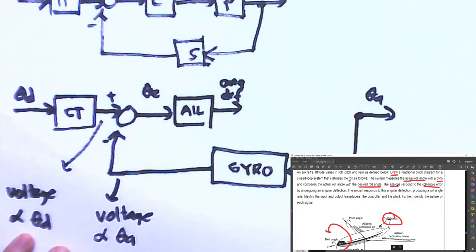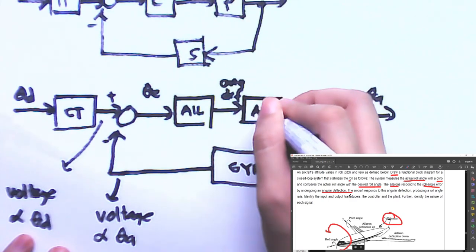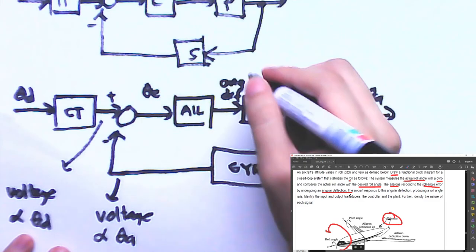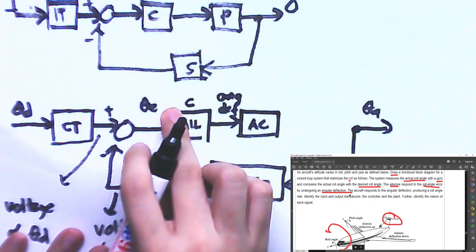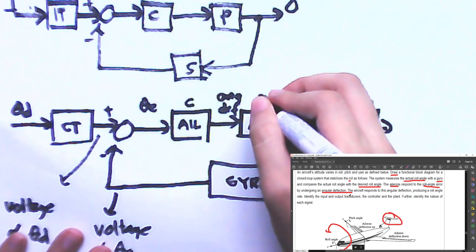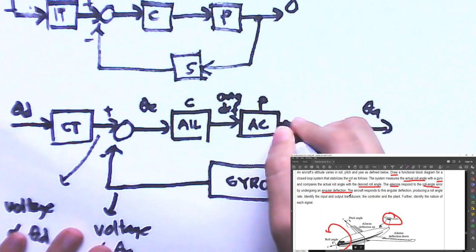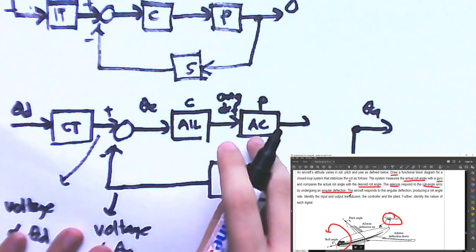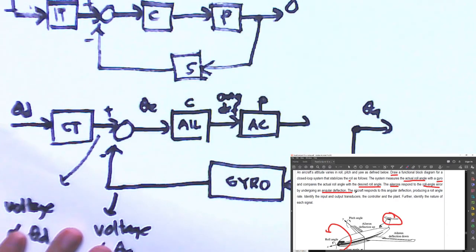The aircraft responds to this angular deflection — it is the plant. The aircraft responds to the angular deflection and produces a roll angle rate ω. So the signal coming out of the plant is the roll angle rate.